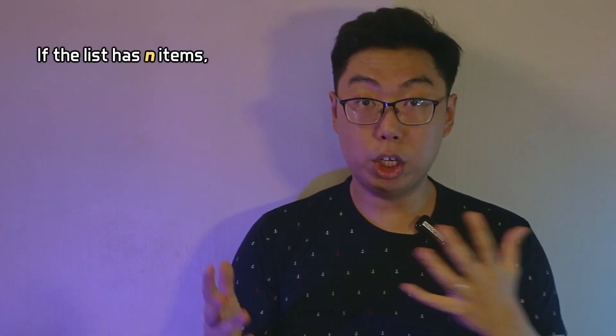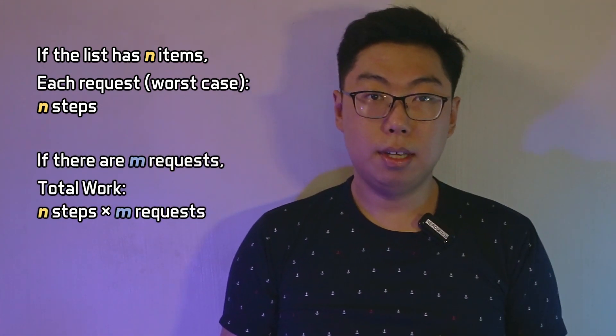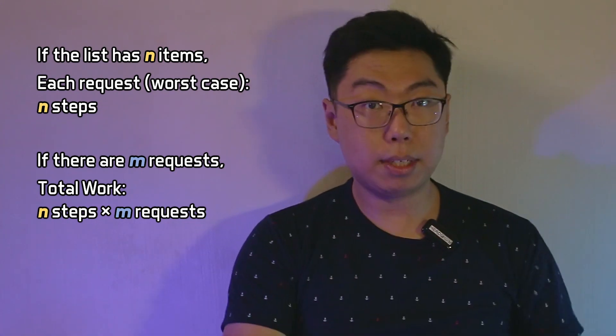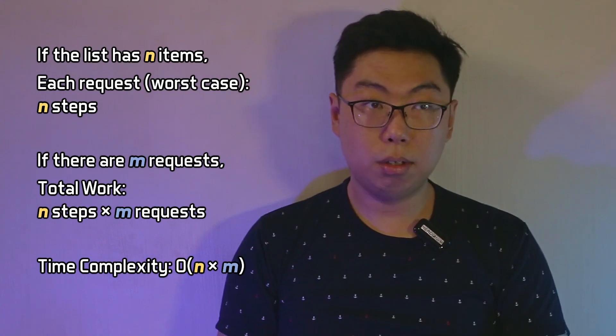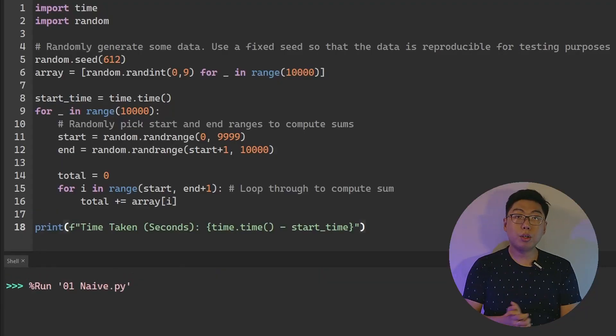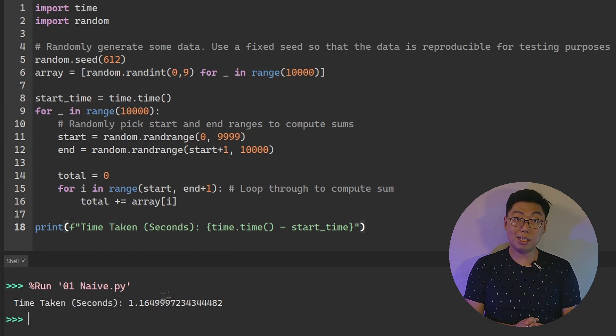If your array has n items, then for each request you have to look up up to n items. If there are m requests, you have to do this m times. Since you're doing n steps m times, under the big O notation, that comes up to O(m × n) — quadratic time. This Python code has 10,000 items and 10,000 requests, and even on a fast CPU, it takes over a second to run. Here's how you can make things a little more efficient.